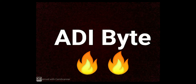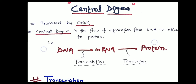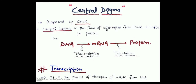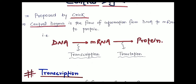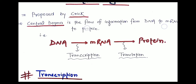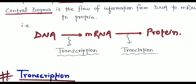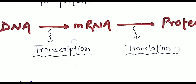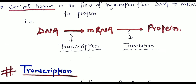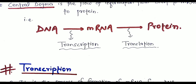Welcome to another video tutorial from ADI Bytes. Today's topic is translation. To understand it, we first need to understand the central dogma, which was proposed by the famous scientist Crick. It is the flow of information from DNA to mRNA to protein. DNA forming mRNA is called transcription, and mRNA being converted to protein is called translation. In the previous video we discussed transcription, so today we will discuss the translation process.